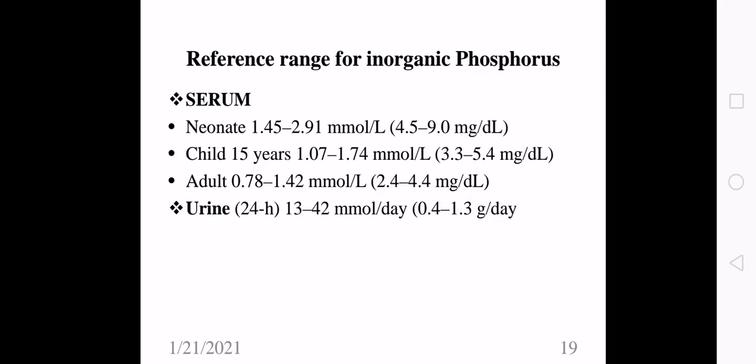Reference ranges for inorganic phosphate in serum vary by age: neonates 1.45–2.9 mmol/L; children up to 15 years 1.7–1.74 mmol/L (3–5 mg/dL); adults 0.78–1.42 mmol/L (2.4–4.4 mg/dL). Urine phosphate is 0.4–1.3 g/day. Phosphate concentration is higher in younger individuals and decreases with age into adulthood.